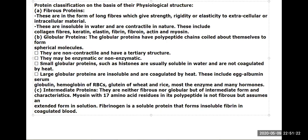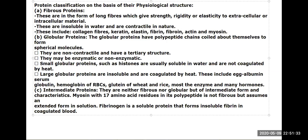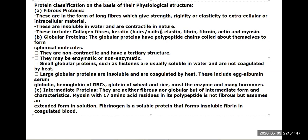Fibrous proteins are insoluble in water and are contractile in nature. Examples include collagen — found in hair and nails as keratin — and elastin. Elastin provides elasticity, for example in ligaments.